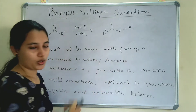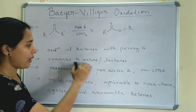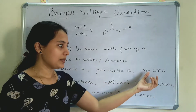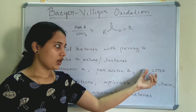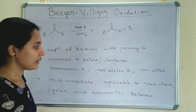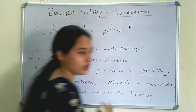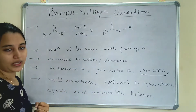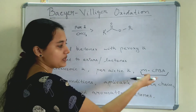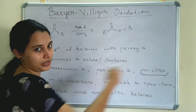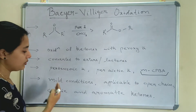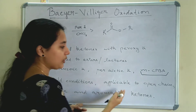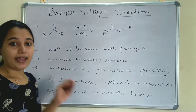Oxidation of ketones with peroxyacid converts them to esters or lactones. The important peroxyacids used are perbenzoic acid, peracetic acid, and MCPBA — meta-chloro-perbenzoic acid. This reaction is conducted under mild conditions and is applicable to open-chain, cyclic, and aromatic ketones.